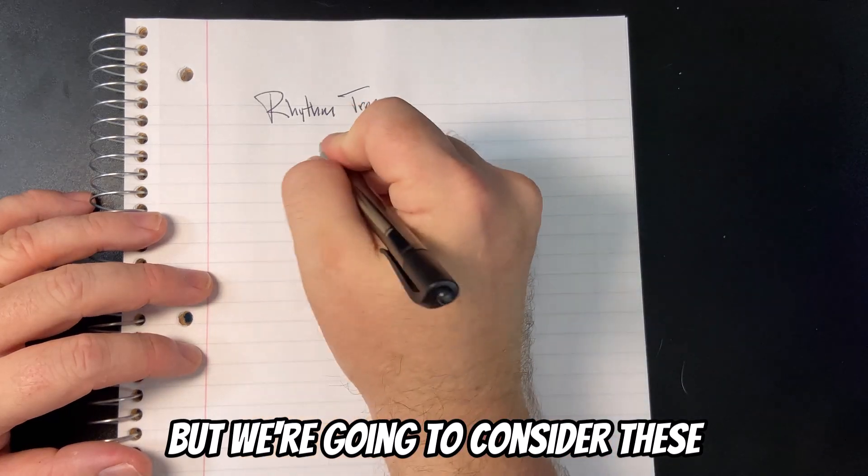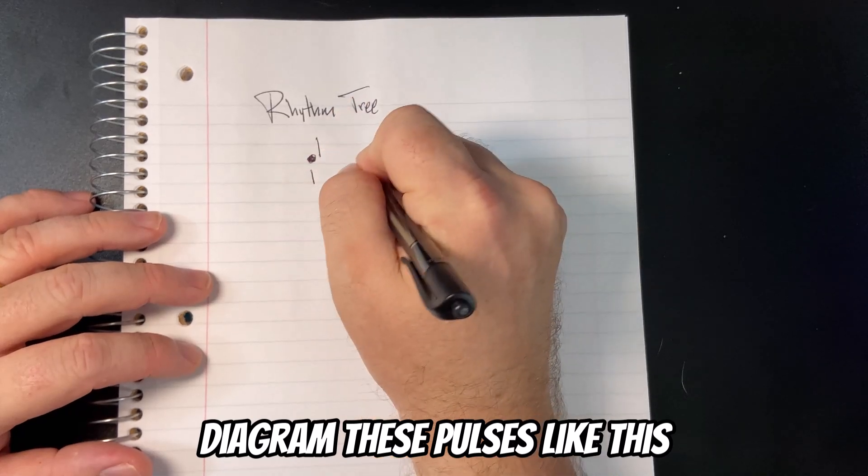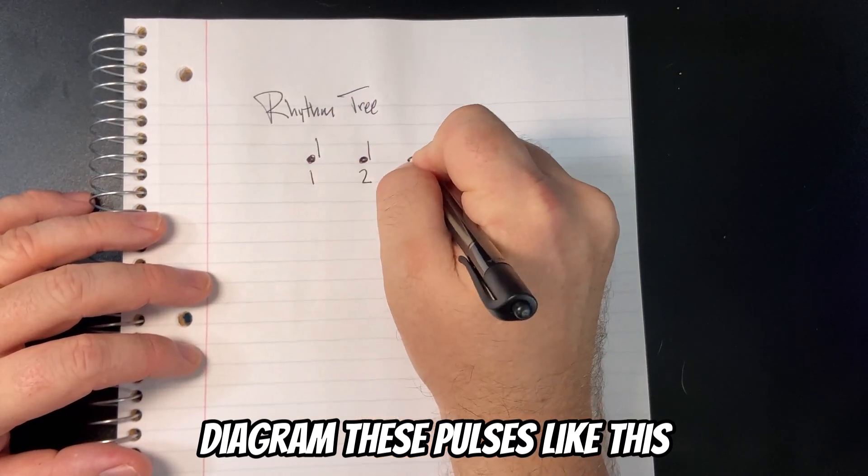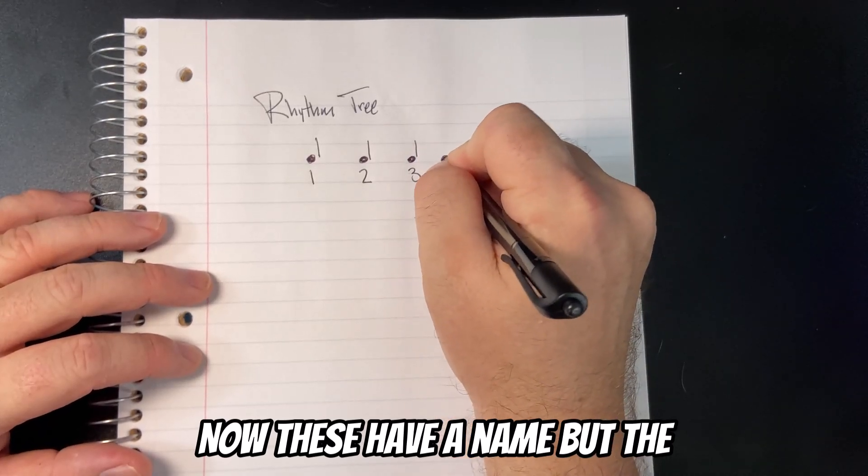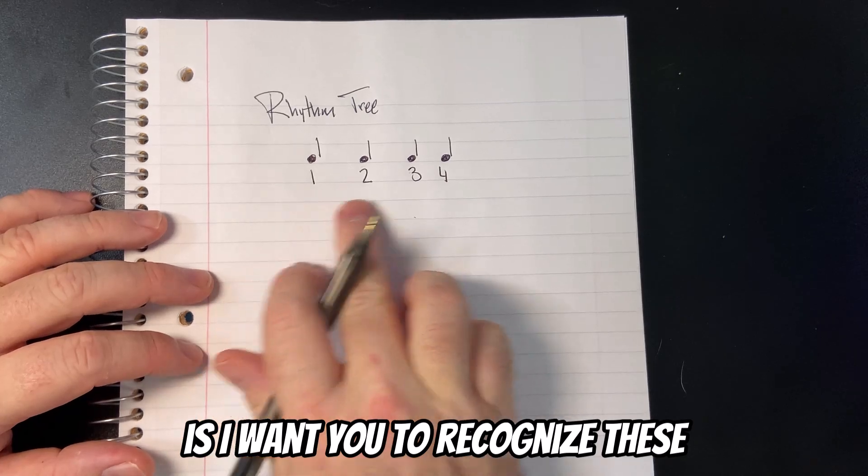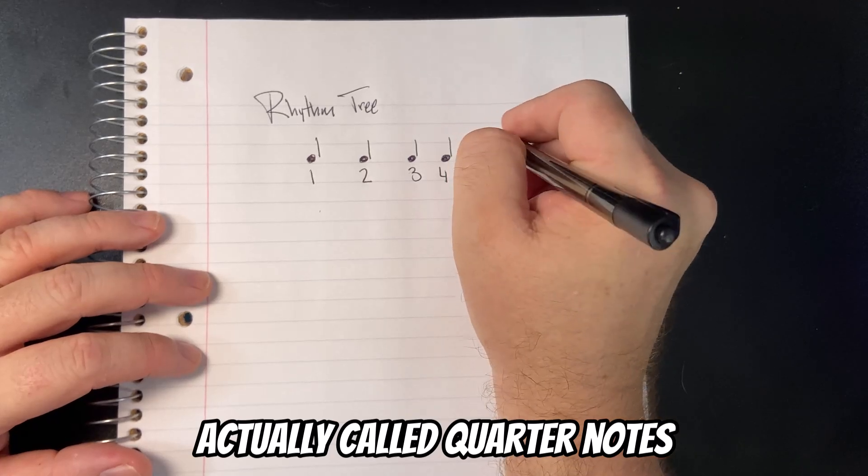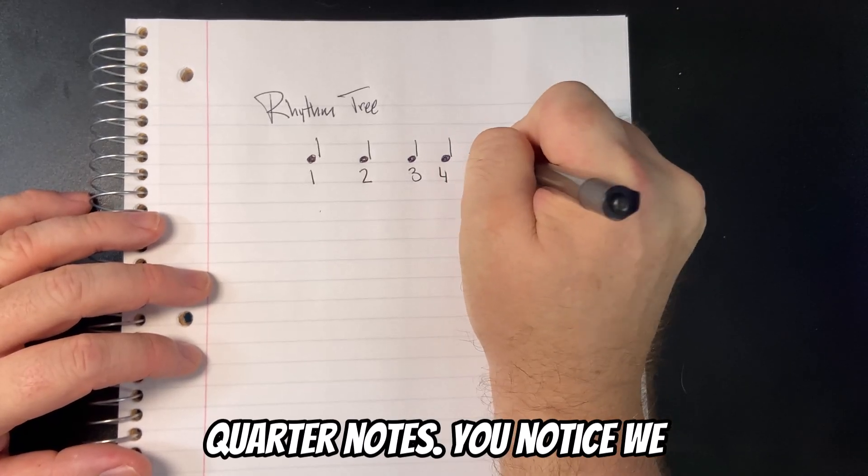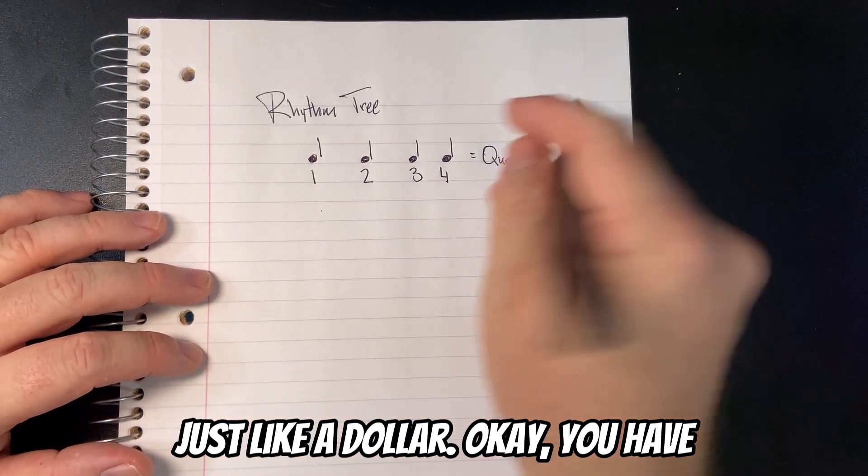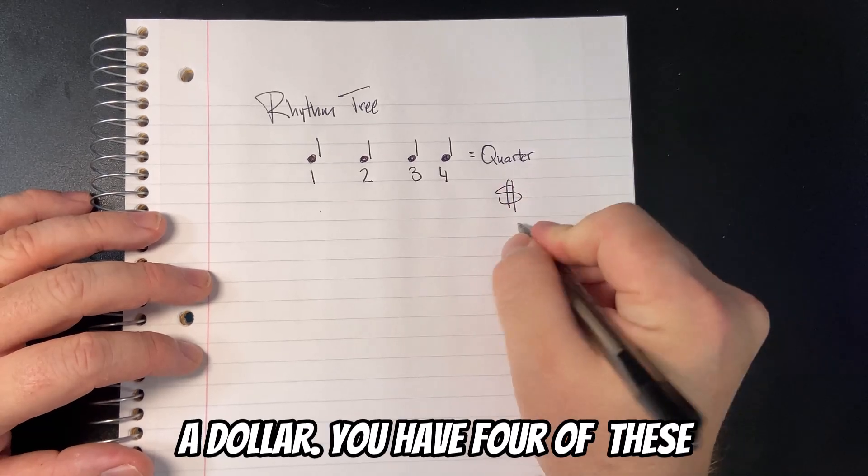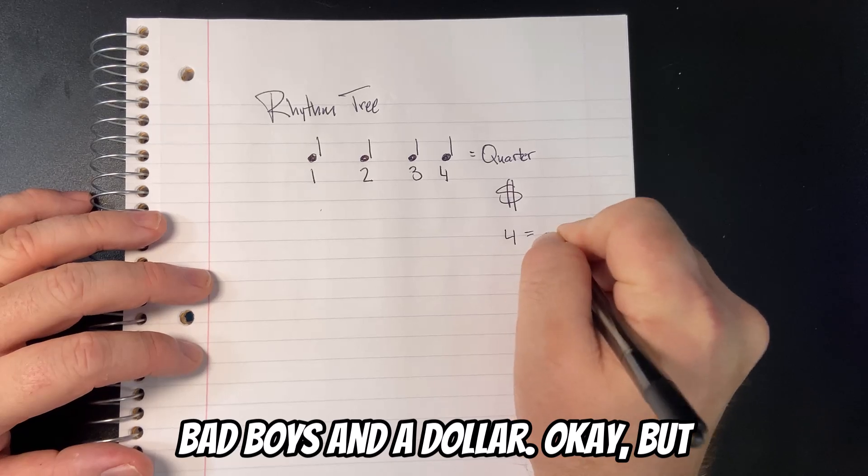We're going to consider these our pulses, and we're going to diagram these pulses like this. Now, these have a name. But the most important thing right now is I want you to recognize these as your pulse or your heartbeat. These are actually called quarter notes.